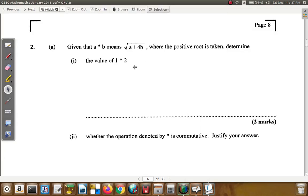Okay, we're at question 2A of the January 2018 CSEC Mathematics paper. It says, given that A asterisk B means the square root of A plus 4B, where the positive root is taken, determine the value of 1 star 2.